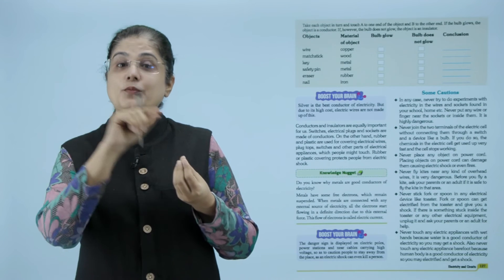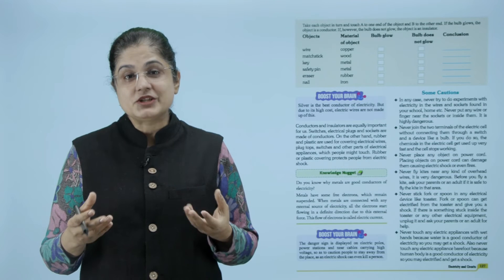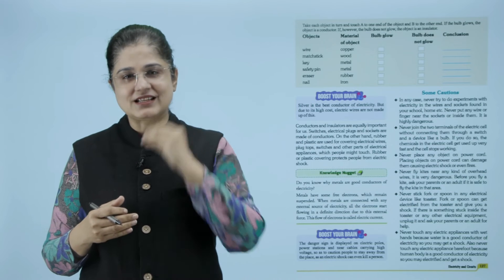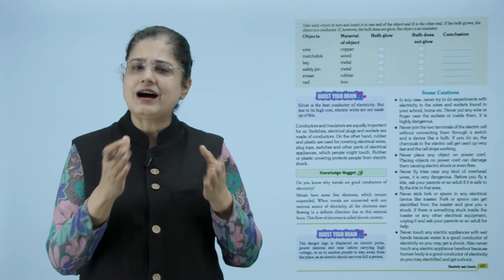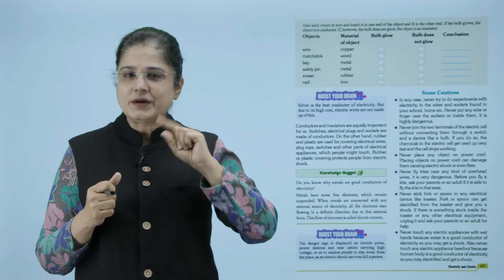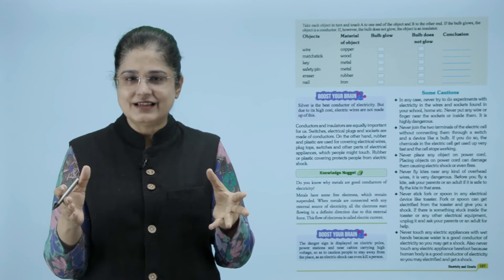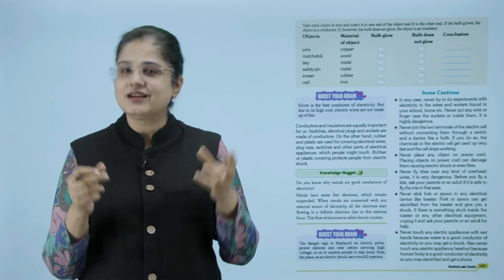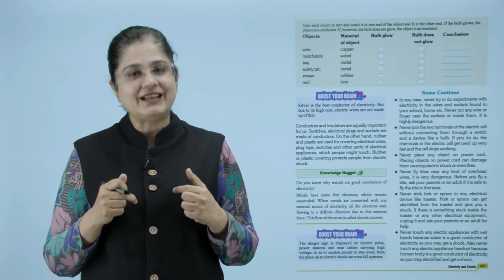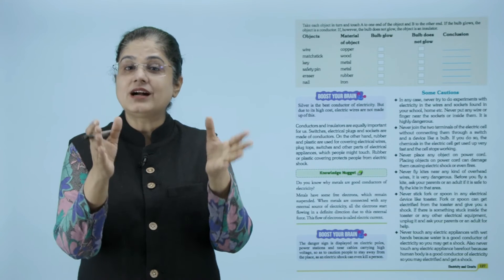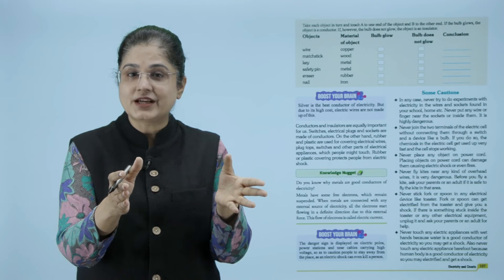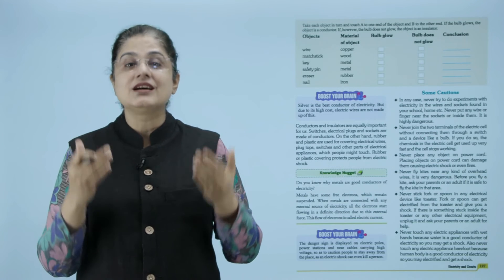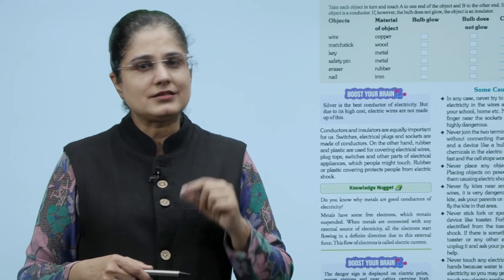So now हम जो भी wires से electrical appliances को connect करेंगे obviously उनमें conductors होना चाहिए ताकि electric current flow हो सके, पर जहाँ पे हम लोग touch करेंगे like the switch जो है, उसका जो बाहर का हिस्सा है, उसमें क्या है, उनको वहाँ पे insulators लगता है जैसे कि plastic हो या rubber हो, ऐसा क्यों क्योंकि हमारी body में भी electric current pass करते हैं तो हम जहाँ touch करें तो वहाँ पे insulators होना चाहिए जिससे कि वो electric current हमें shock ना दे सके, हमें electric shock ना लगे।